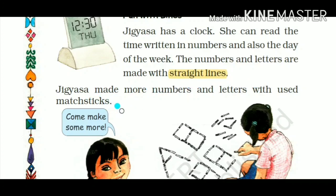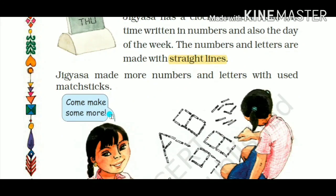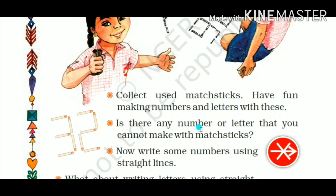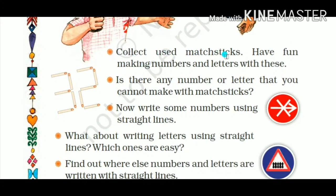Jigyasa made more numbers and letters using used matchsticks. She made A, B, C, D and others with matchsticks. Now, is there any number or letter you cannot make with matchsticks? Some letters and numbers — like D, B, O, S, and curved ones — were not possible using straight matchsticks.